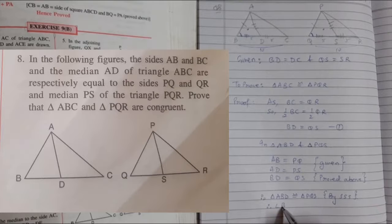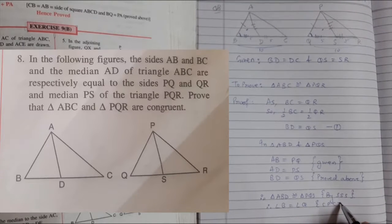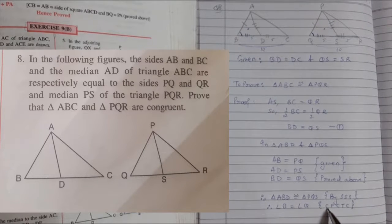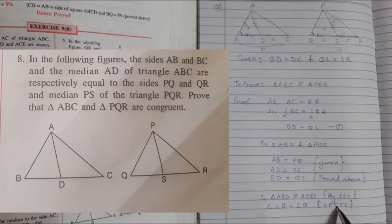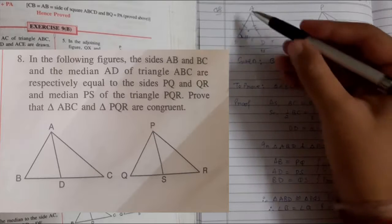Therefore, angle B equals angle Q by CPCTC. CPCTC means corresponding parts of congruent triangles are also congruent. Now let's take the full triangle.